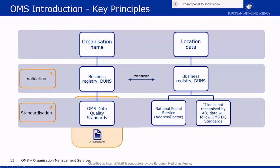At location level, we have support from the National Postal Service. In our system we have embedded a tool that has files with information from more than 240 postal services with all the details on how we should maintain an address. What details should be captured in address line 1? What is the correct city? What is the correct postal code? Is there any sublocality information relevant? We have the support from the National Postal Service, with exceptions such as PO Boxes, for which we follow the rules in our data quality standards.